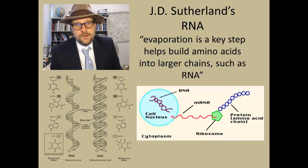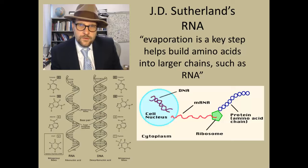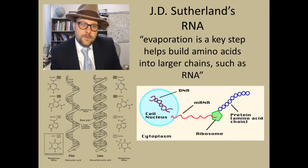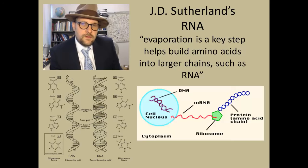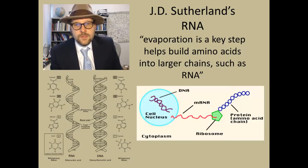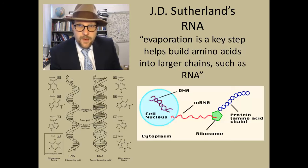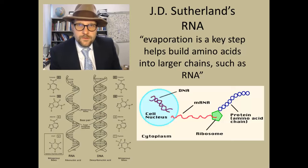The next step was to take those amino acids and build them up into larger polymers, particularly RNA. RNA codes for proteins and acts as a messenger between the DNA and the cell, coding for proteins and amino acids used by the cell. RNA is a stepping stone to DNA. In the 1990s, J.D. Sullivan and other researchers in England showed you can create long polymer chains resembling RNA by taking amino acids, mixing them in different combinations, and evaporating the water.